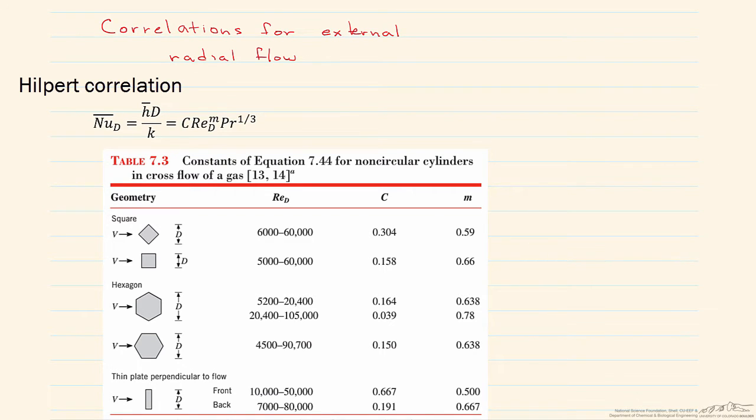So the first one, which is known as the Hilpert correlation as shown here, is the least complicated of all the correlations we could look at. This gives us a Nusselt number, and the reason we're looking for the Nusselt number is in order to calculate convective heat transfer.